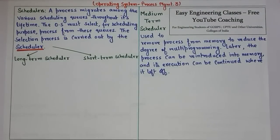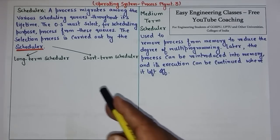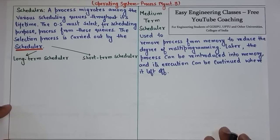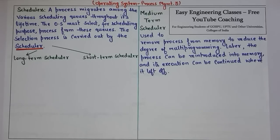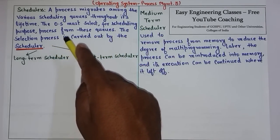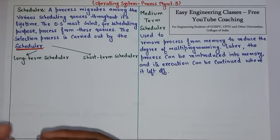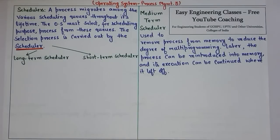Now let's see the concept of schedulers. A process migrates among the various scheduling queues throughout its lifetime. When a process is created it goes into the job queue; when it is ready for execution it moves to the ready queue; and during execution if it waits for an IO device it goes to the device queue. The OS must select processes from these queues, and that selection is carried out by a process called a scheduler.